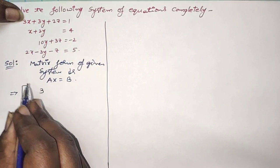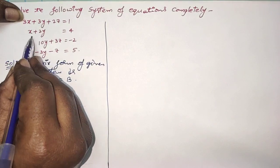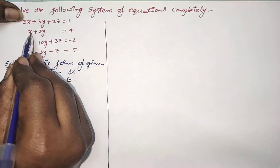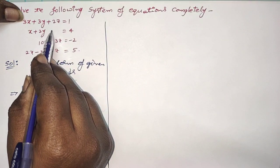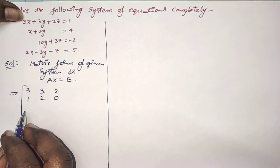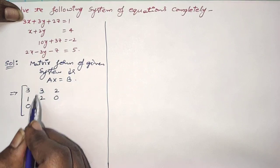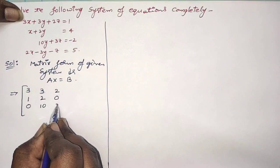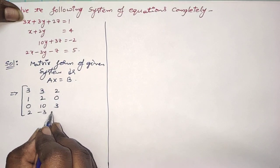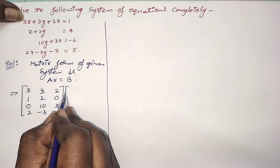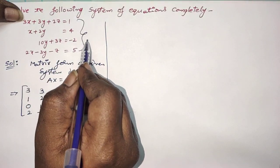So the first row of A is 3, 3, 2. Next, the coefficients of the variables in the second equation form the second row: 1, 2. There is no Z term, so its coefficient should be written as 0. Next, write the coefficient of X here, which is 0, then 10, 3, then 2, minus 3, minus 1. Note that 4 equations are given in 3 variables only.